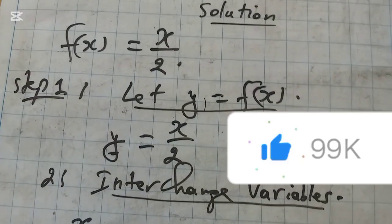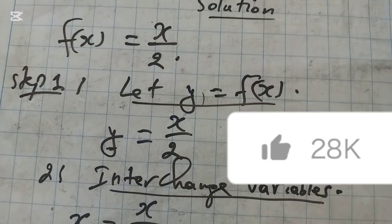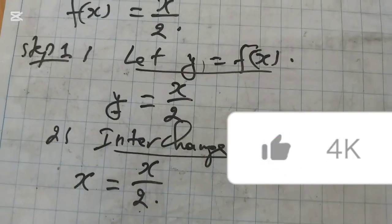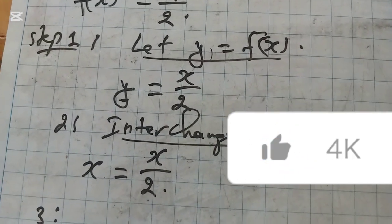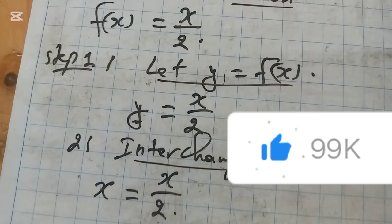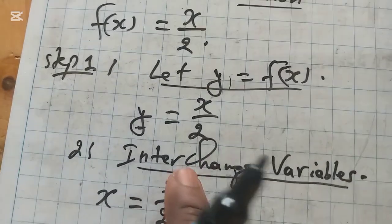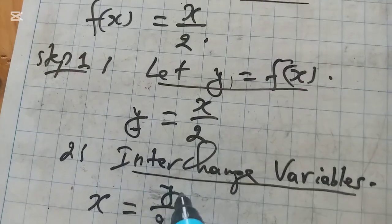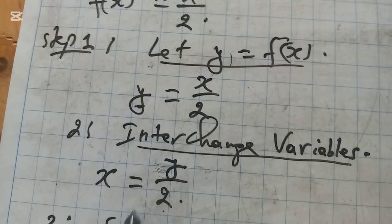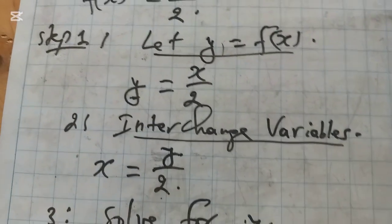Step number 3 is to solve for y. If we have x which is equal to y over 2, we need to solve for y, not x.